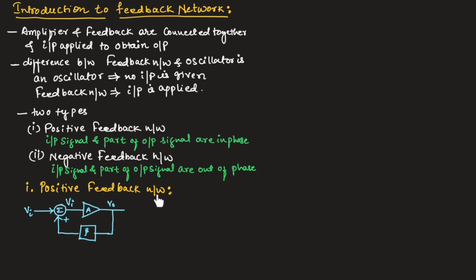Let us understand the positive feedback network. This diagram shows the positive feedback network, where the input signal is given to an amplifier and an output voltage is obtained. A part of the output voltage is fed back to the input. The feedback voltage is represented as VF, which is taken as a positive value in a positive feedback network and as a negative value in a negative feedback network.